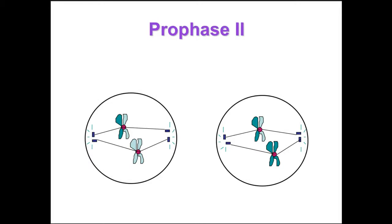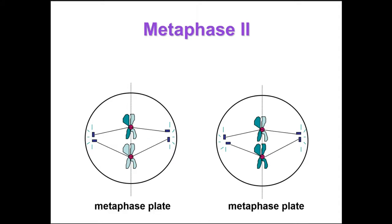In prophase two, the spindle apparatus forms. In late prophase two, the chromosomes, still consisting of two chromatids, will move toward the metaphase plate. Prophase two marks the beginning of meiosis two. In metaphase two, the sister chromatids are arranged at the metaphase plate. Because of crossing over in meiosis one, the two sister chromatids of each chromosome are no longer genetically identical. The kinetochores of sister chromatids attach to microtubules extending from opposite poles, pulling the chromosomes to the middle of the cell.